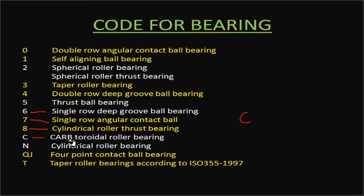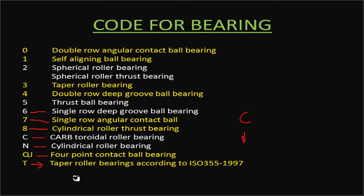Bearings starting with the letter C are toroidal roller bearings. Those starting with N are cylindrical roller bearings. Bearings starting with QJ are four-point contact ball bearings. Some taper roller bearings are also designated starting with T, according to ISO 355 standard.